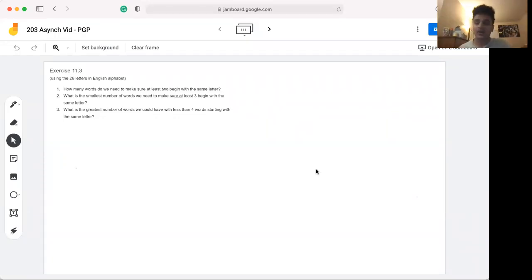Hey everybody, so today we're going to talk a little bit more about the pigeonhole principle. Hopefully in lecture you guys have seen a more formal definition and had the chance to play around with that. So today we're going to go through an example that's going to build a little bit more on the intuition side, using the 26 letters in the English alphabet.